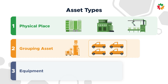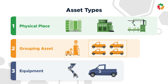Last is the equipment itself. These are the assets that you perform work on in Limble and are often the children of the first two asset types. Within a production line, this would be robot one, robot two, etc. And for a vehicle fleet, this would be truck one, truck two, and so on.